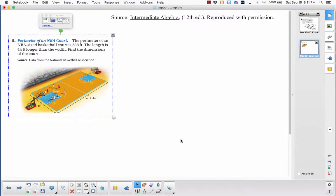All right, here's a word problem where they give you some information about the perimeter of an NBA court and they want to know what the dimensions are.